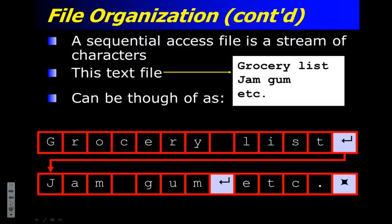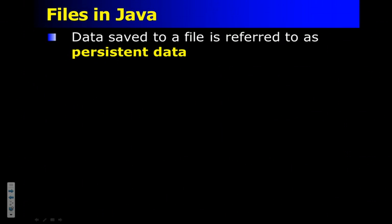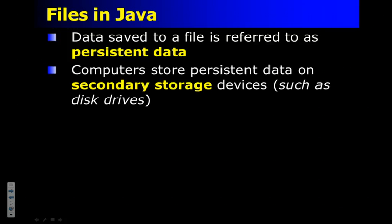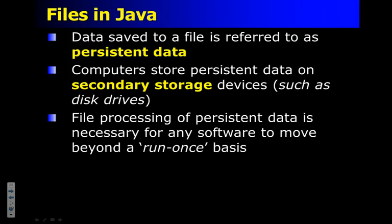What else does this look like that you already know about in programming, where you have a long string of things collected together? Starts with an A and ends in a Y — an array. Similar, but not the same. A file is defined as persistent data. Persistent because it sticks around. Computers will store persistent data on storage devices, specifically secondary storage devices such as a disk drive.